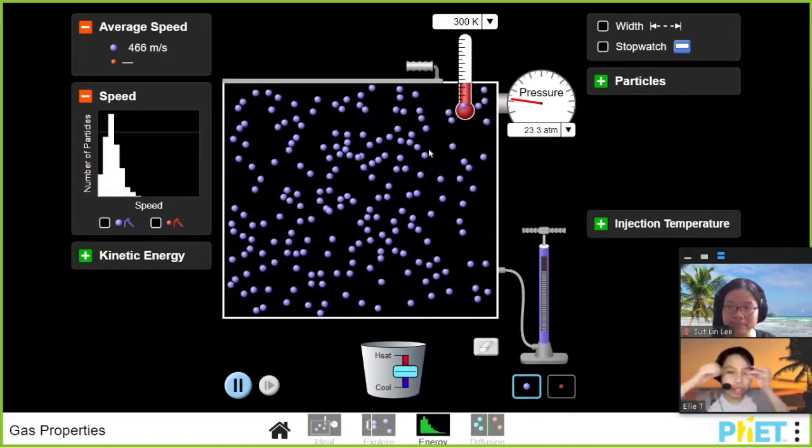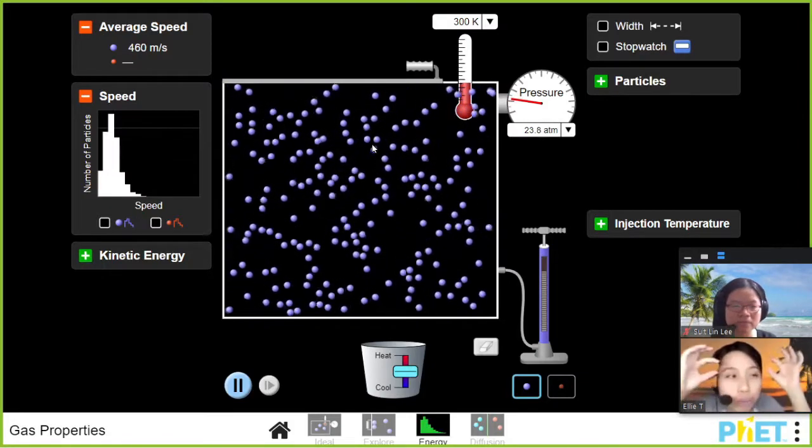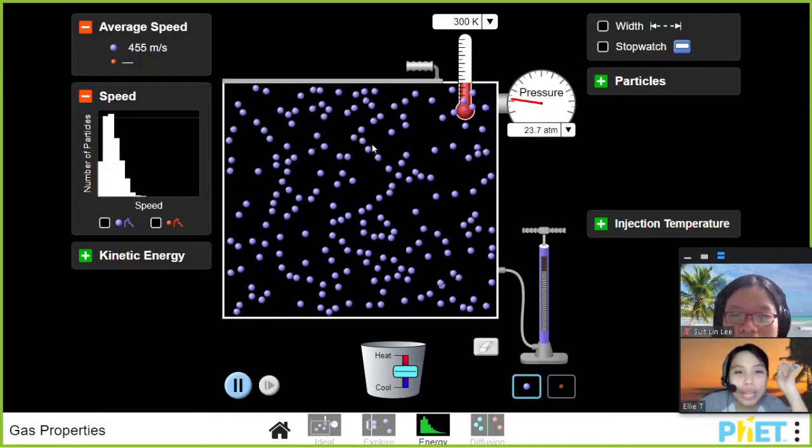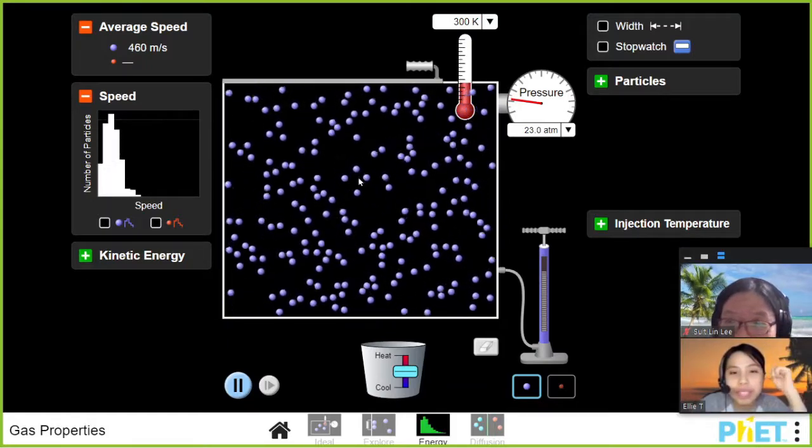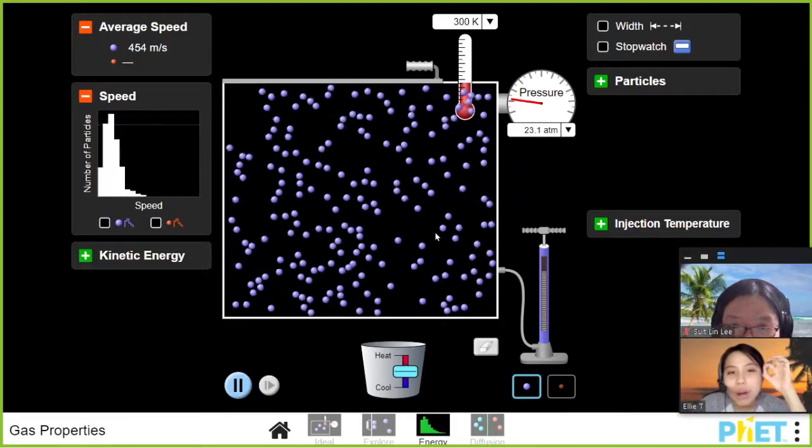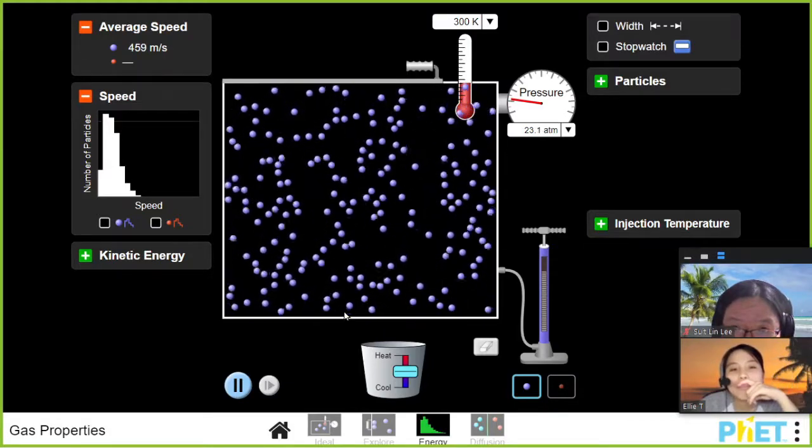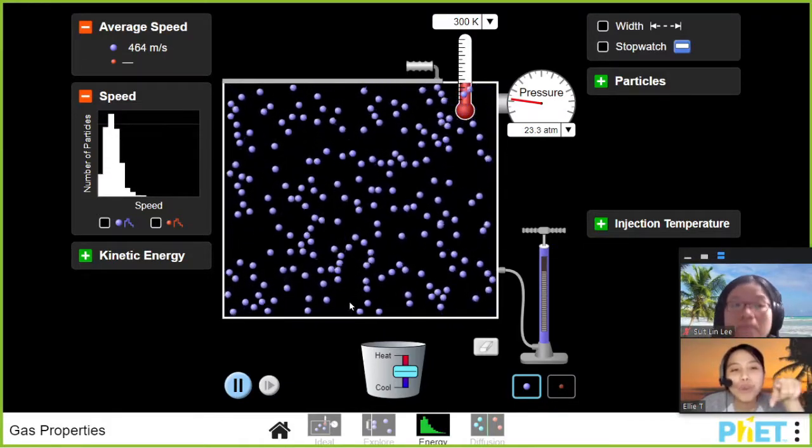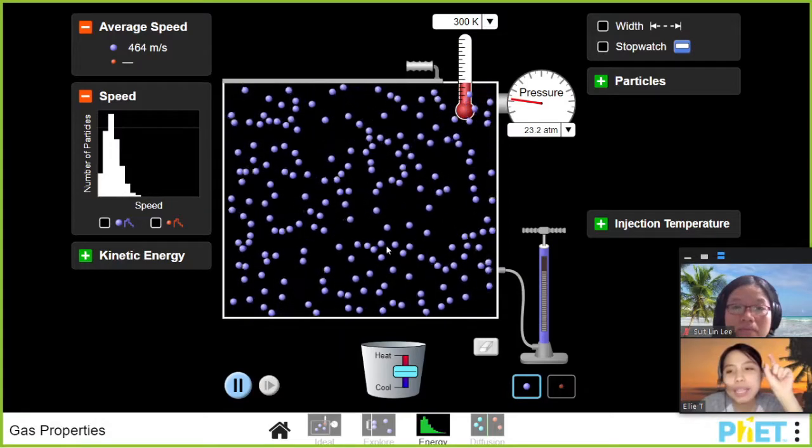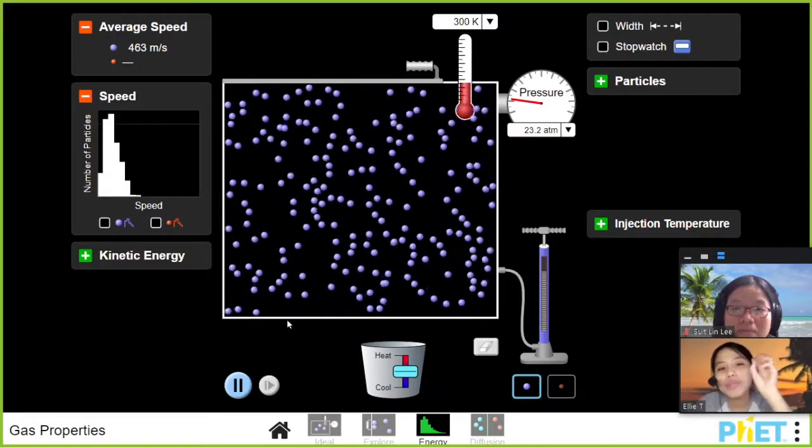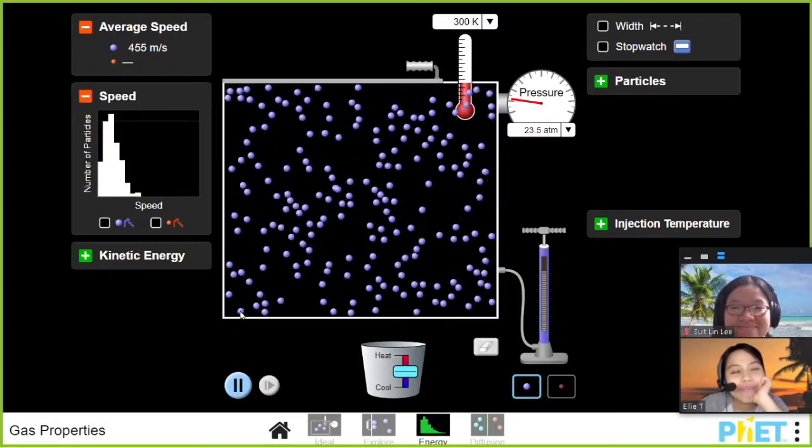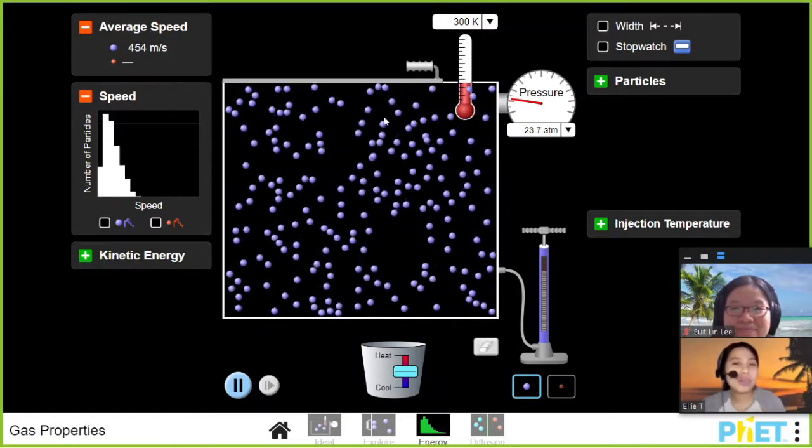The second observation I want you to put glasses on your eyes and look very carefully is, you look at the speed of all the particles moving. Are all of them moving at the same speed? You look very carefully. Maybe you follow one, you look at the other one. Can you see any particles that are just chilling there and barely moving?